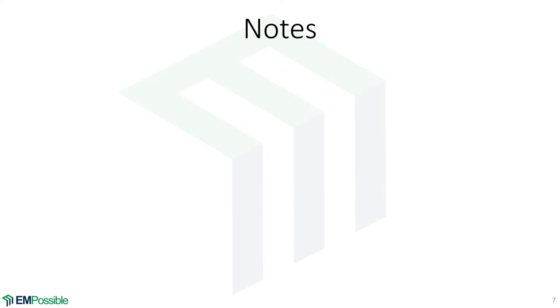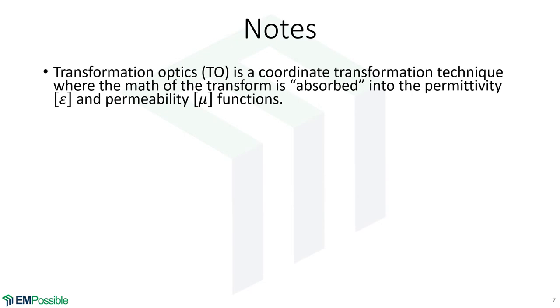I want to finish this video with some quick notes about transformation optics. In following videos, we'll get into how to actually implement transformation optics. At its core, transformation optics is just a coordinate transformation technique. We take the math from XYZ that we apply to Maxwell's equations and move it over to the permittivity and permeability. We come away with this map of permittivity and permeability as a function of position. That is it. After that, transformation optics is done.